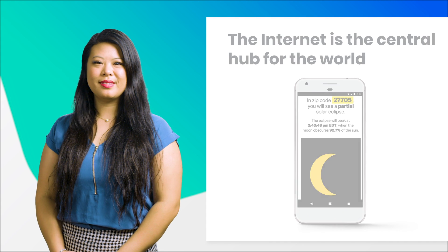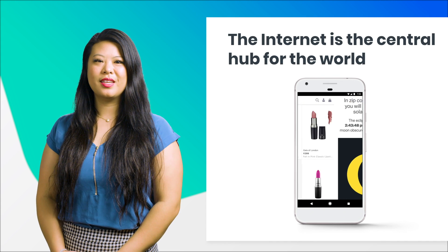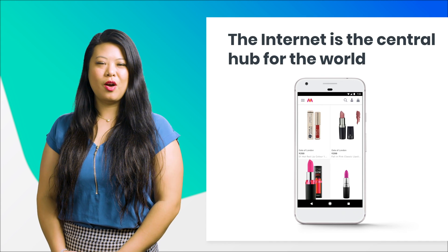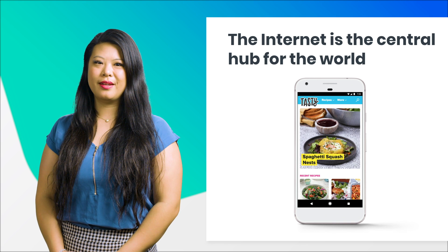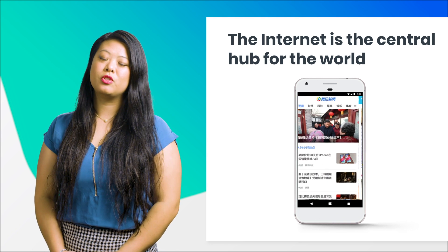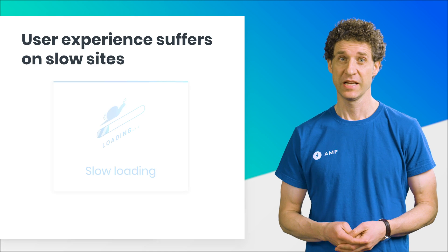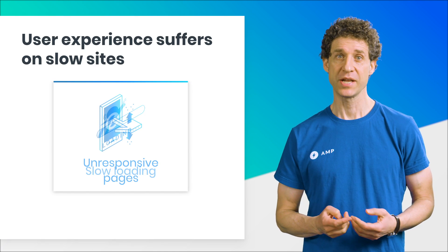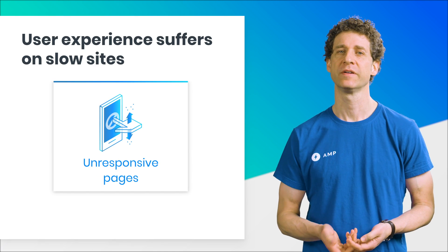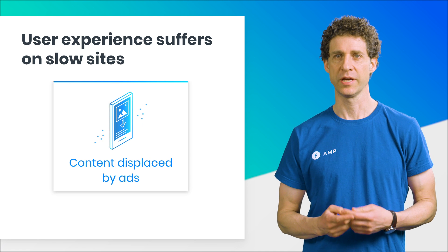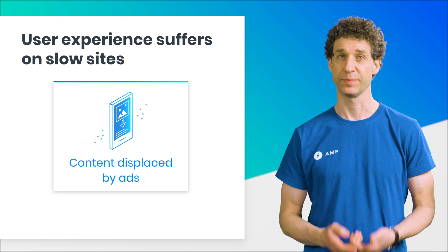In many ways, the internet is a central hub for the world. Every day, more and more people from all over the world access information online. Unfortunately, many people don't use the internet on lightning-fast connections or high-powered devices. When websites are developed for only the fastest connections and the fastest devices, the experience of many users suffers. Sites can load slowly, pages take too long to become responsive, and as images and ads load in, content suddenly gets displaced.